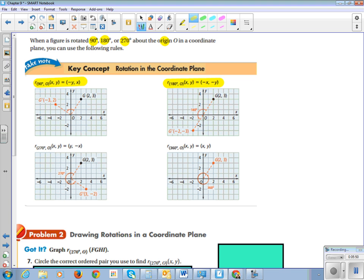For 180 degree rotation about the origin, you just put a negative sign on all of your coordinates, your X and your Y. Rotation of 270 degrees about the origin, you switch the X and the Y, but this time, the second coordinate gets the negative sign.